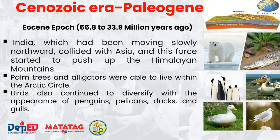During the Eocene epoch, India had a slow northward movement pushing up toward Asia, forcing the Himalayan mountains to rise. Palm trees and alligators began living in the Arctic Circle. Birds continued to increase in variety, including penguins, pelicans, ducks, and gulls.